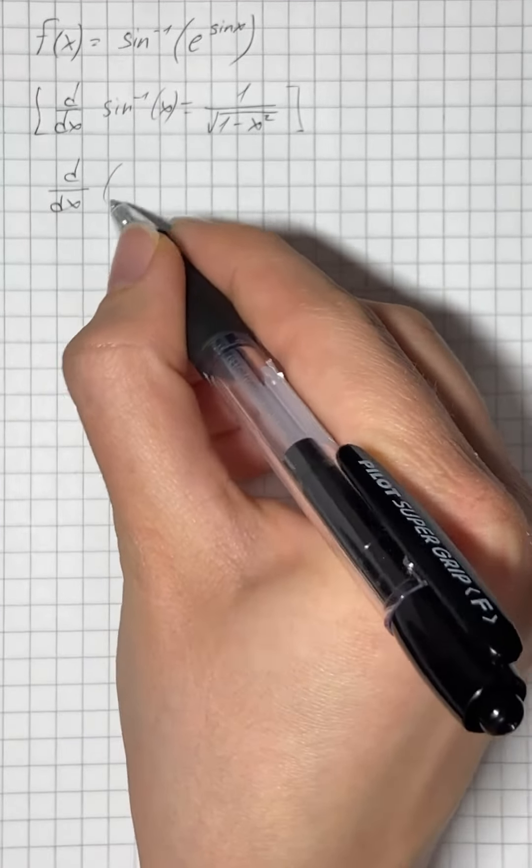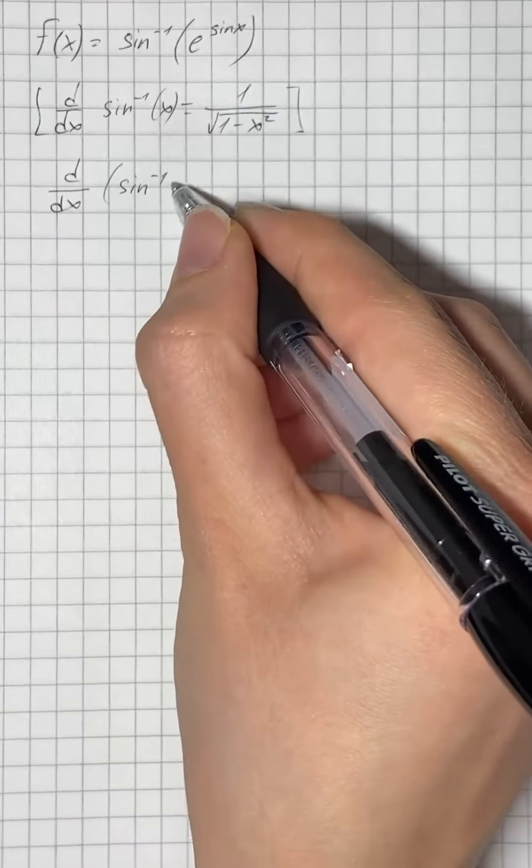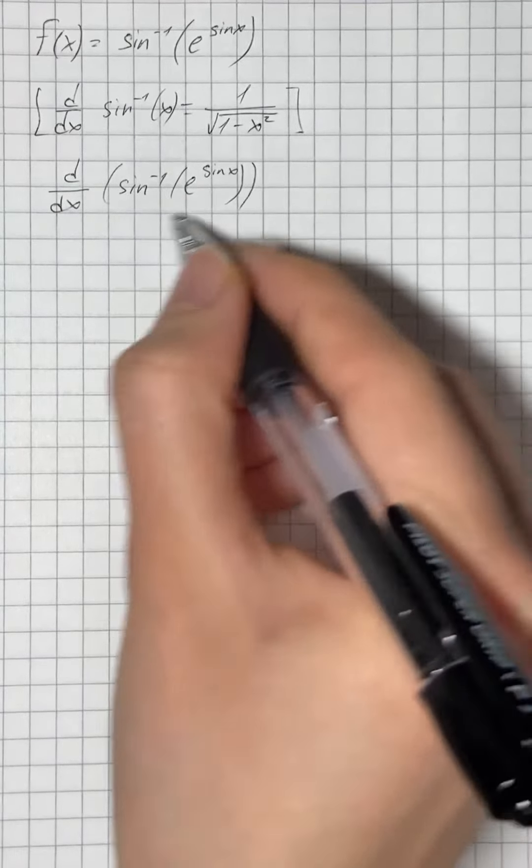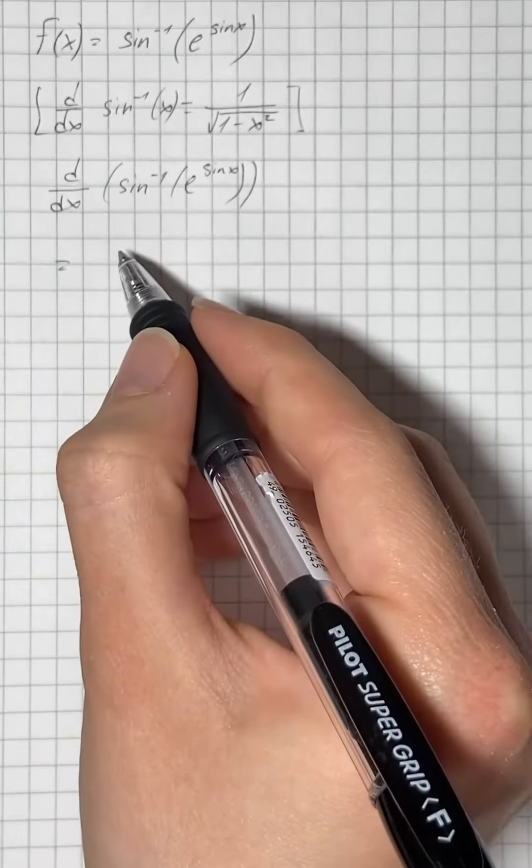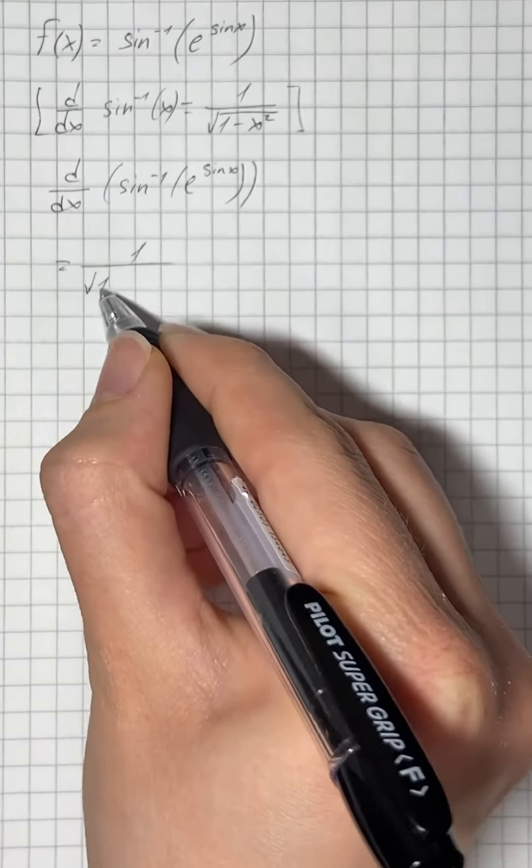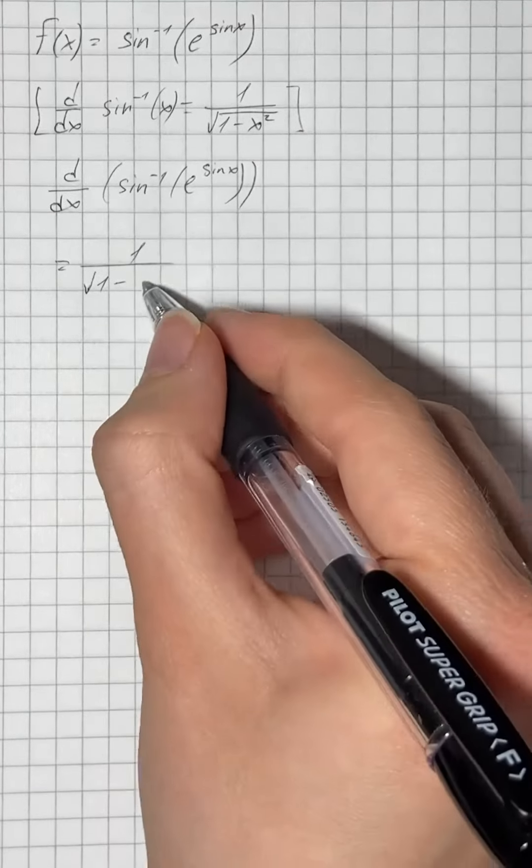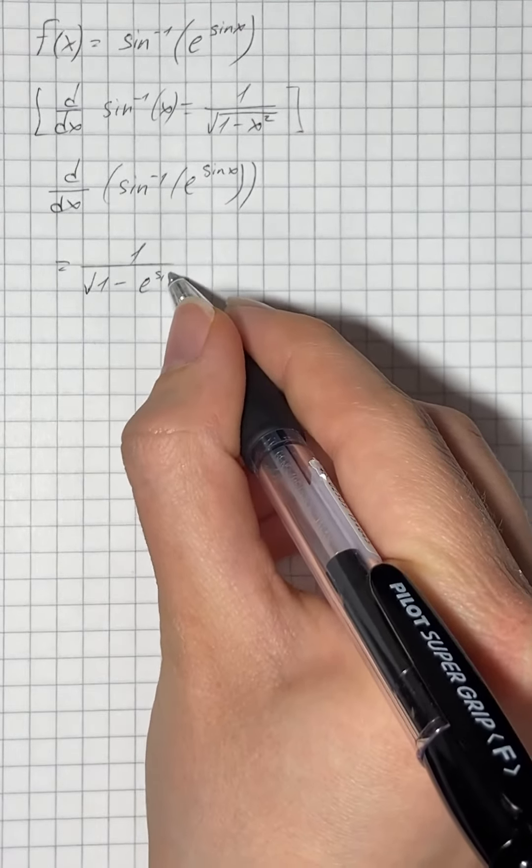Now the derivative of inverse sine of e to the power of sine of x equals 1 over the square root of 1 minus, and instead of x squared, we have e to the power of sine of x squared.